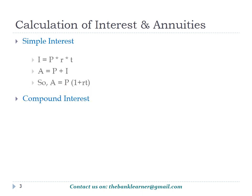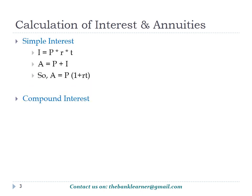Simple interest is calculated using the formula I = P × R × T, where I is the interest, P is the principal amount, R is the rate of interest per annum, and T denotes time. The total amount accumulated is the sum of the principal and the interest, i.e., A = P + I, which can also be expressed as A = P × (1 + RT).